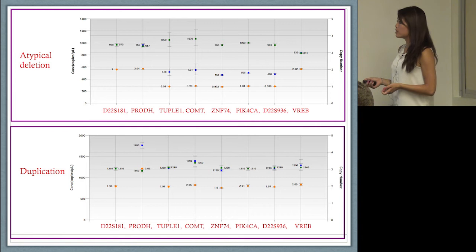We also found an individual with an atypical deletion that starts at tuple one. We were also able to find an individual with a duplication—this individual has a duplication at ProDH as indicated by the copy number three.